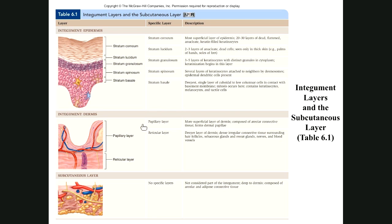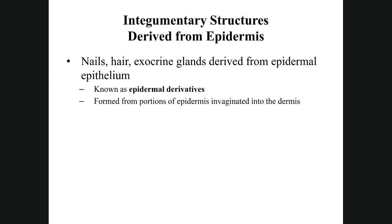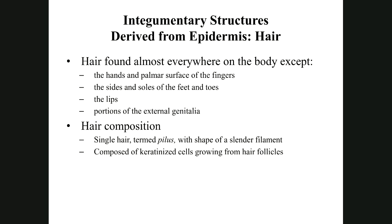We'll now flow from the layers into the accessory structures. I like to call them accessory structures; the textbook calls them epidermal derivatives. Most of these accessory structures are made from — derived from — epidermis, hence the term. So nails, hair, and glands. Let's start with hair.